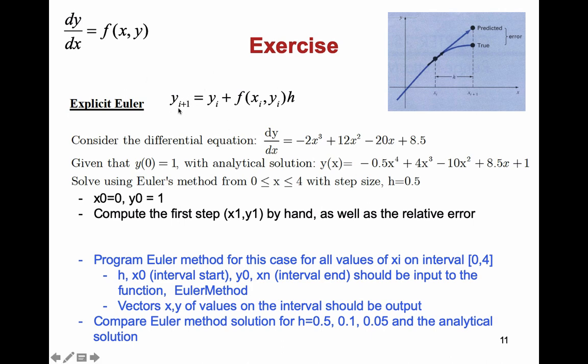Basically, I say, okay, my next y, yi plus 1, is my previous y, and this is my slope estimate, F of xi, yi times h.